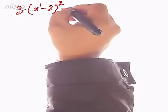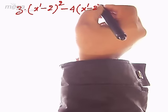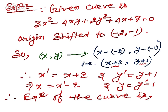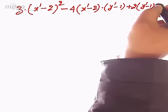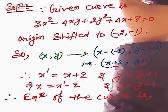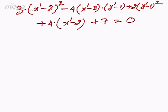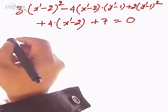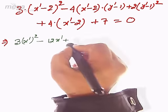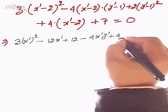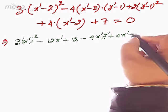Therefore, the equation of the curve in the new situation becomes: 3(x' - 2)² - 4(x' - 2)(y' - 1) + 2(y' - 1)² + 4(x' - 2) + 7 = 0. Expanding: 3x'² - 12x' + 12 - 4x'y' + 4x' + 8y' - 8 + 2y'² - 4y' + 2 + 4x' - 8 + 7 = 0.